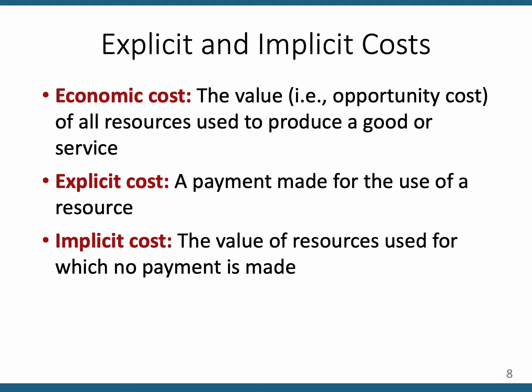Implicit costs are not as easy to see. Remember we talked about opportunity costs? Opportunity costs are implicit costs. For example, consider a person graduating with a bachelor's degree in accounting who is deciding whether to stay in school one more year to earn an MBA. The MBA will cost $15,000 in tuition — that's the explicit cost. But there are implicit costs too: it will take a year to earn the MBA, during which you wouldn't be able to work.